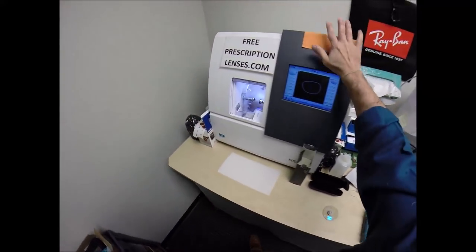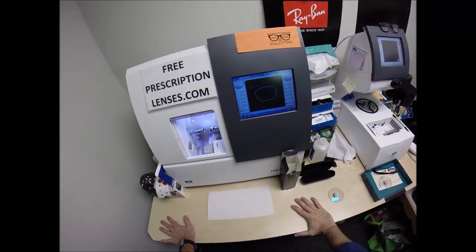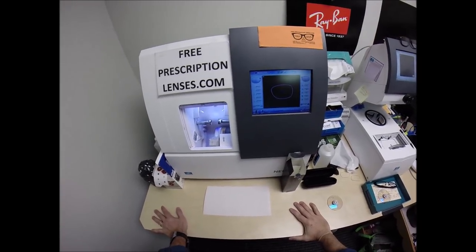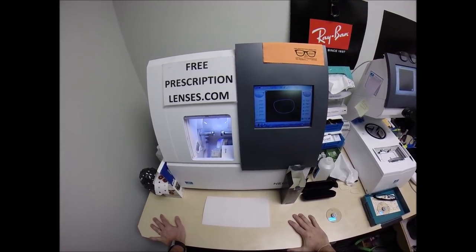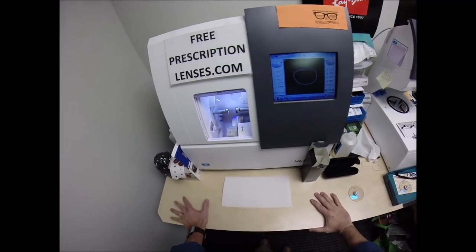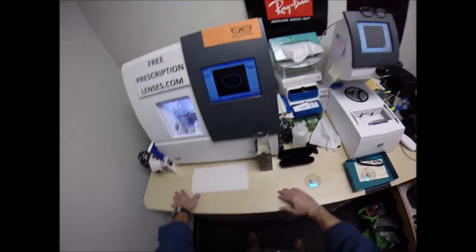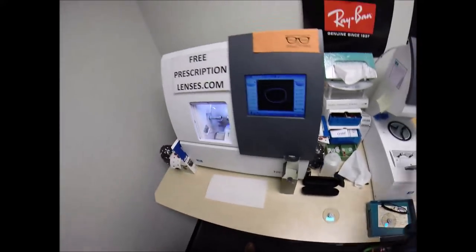Now this is the edger. This is what's going to do all the work while I run my mouth. It weighs 200 pounds. It costs $40,000. I recommend everyone go out and buy their own, put it on your kitchen counter. Then you can cut your own lenses at home, and you won't need this guy with the two thumbs and the bad jokes to do it for you.